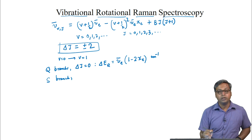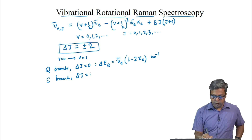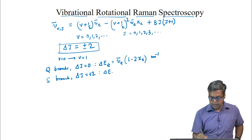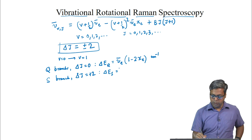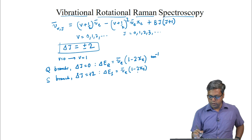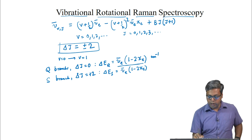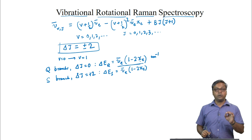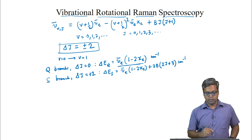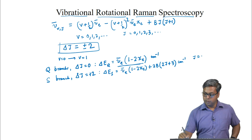We also get the S branch, where delta J = +2. For the S branch, delta E_S equals nu-bar_E * (1 minus 2*chi_E) plus an extra term: 2B * (2J+3), in wave numbers, where J = 0, 1, 2, and so on.